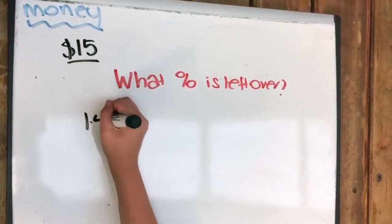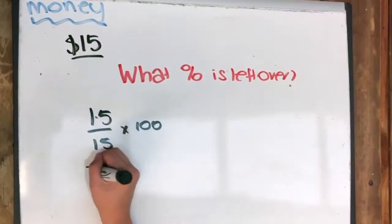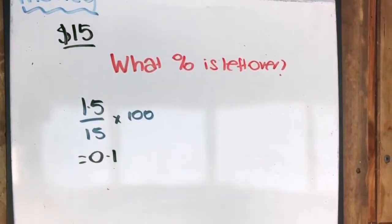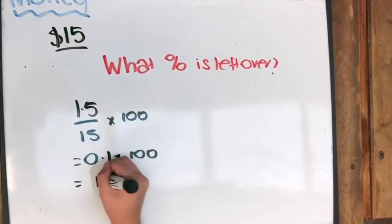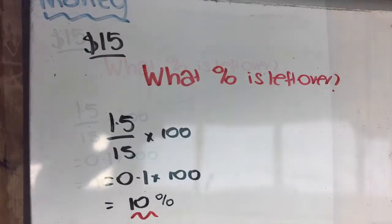The percentage left over is 1.5 divided by 15 times 100. Which means 10% of the money is left over.